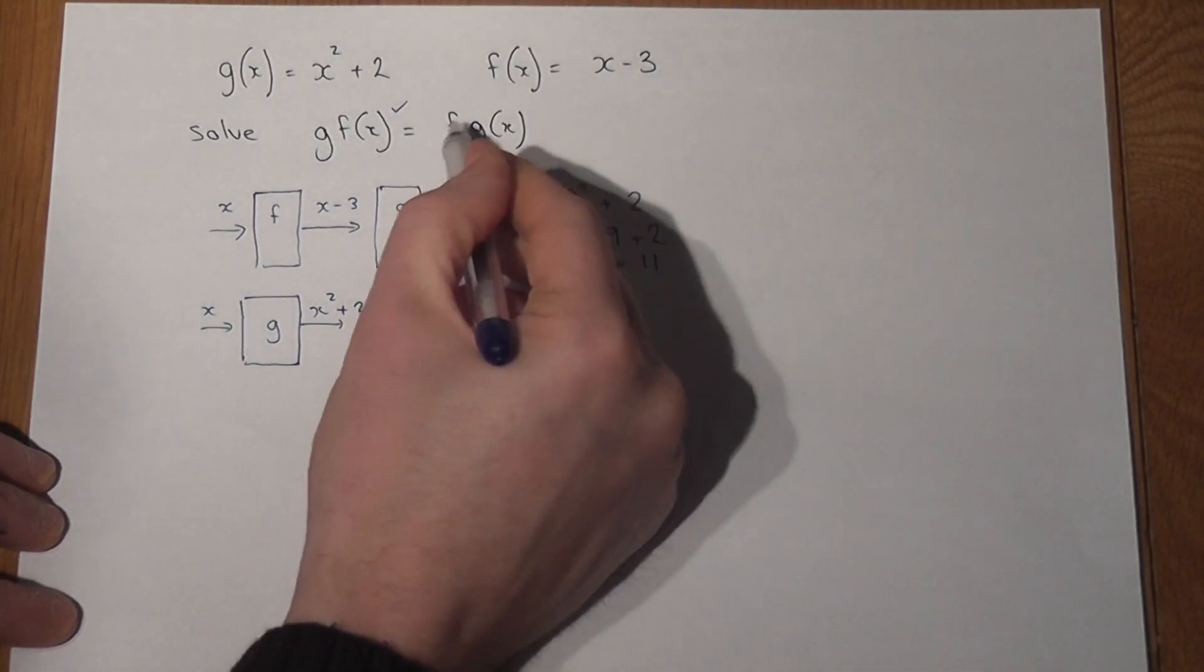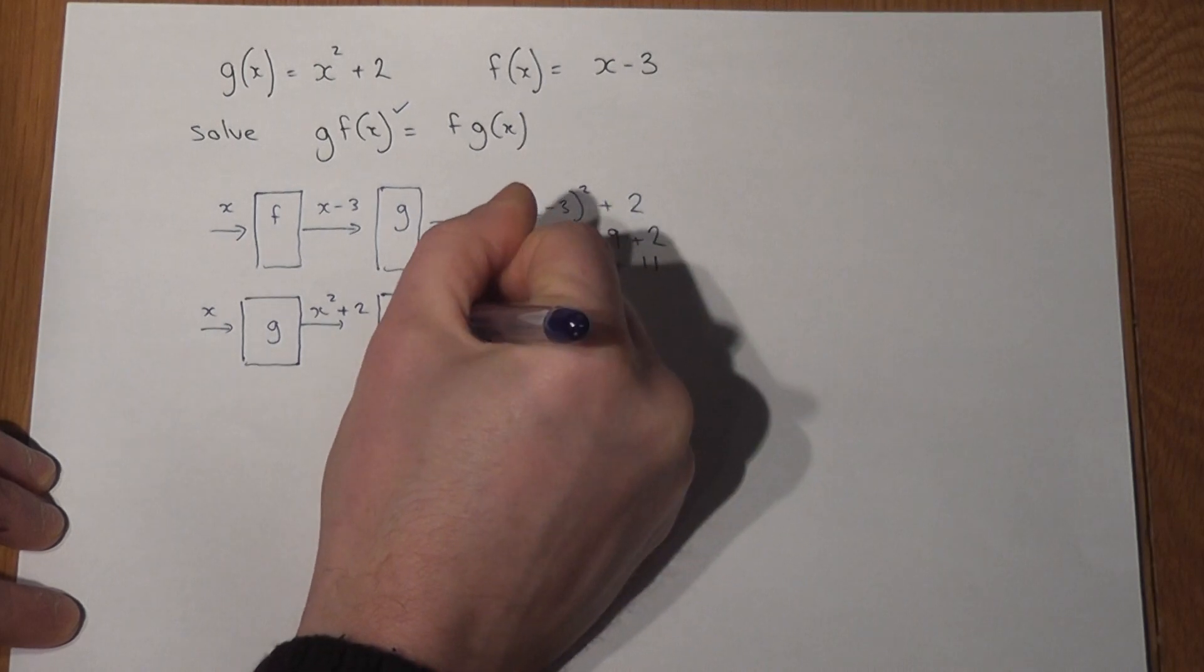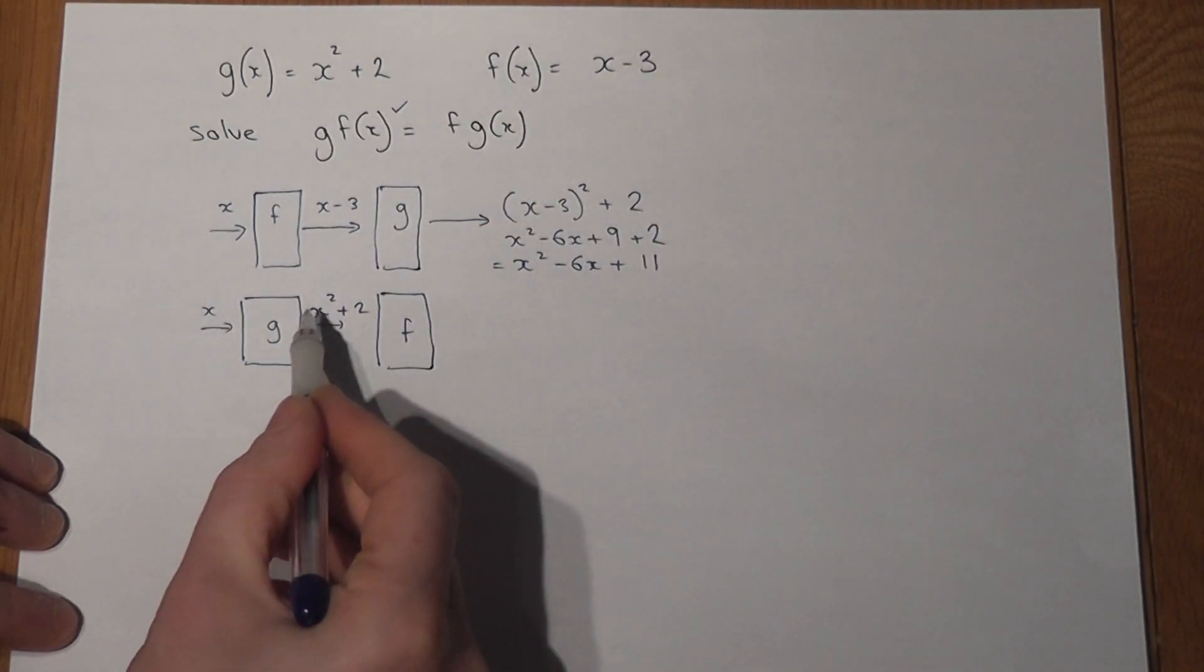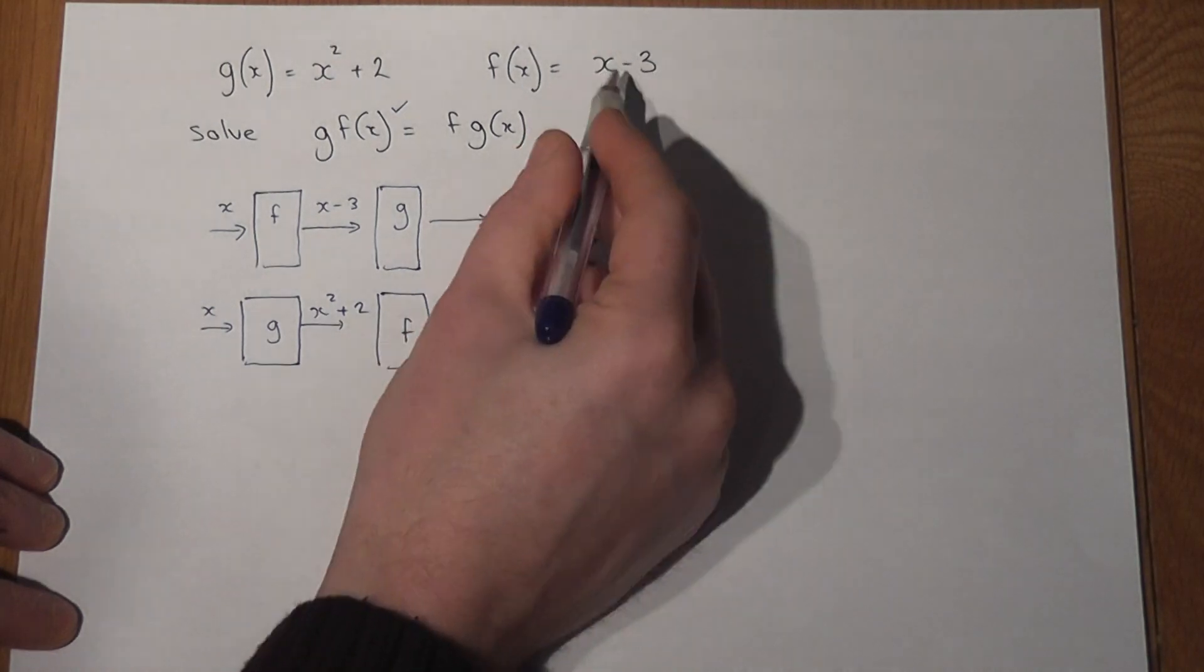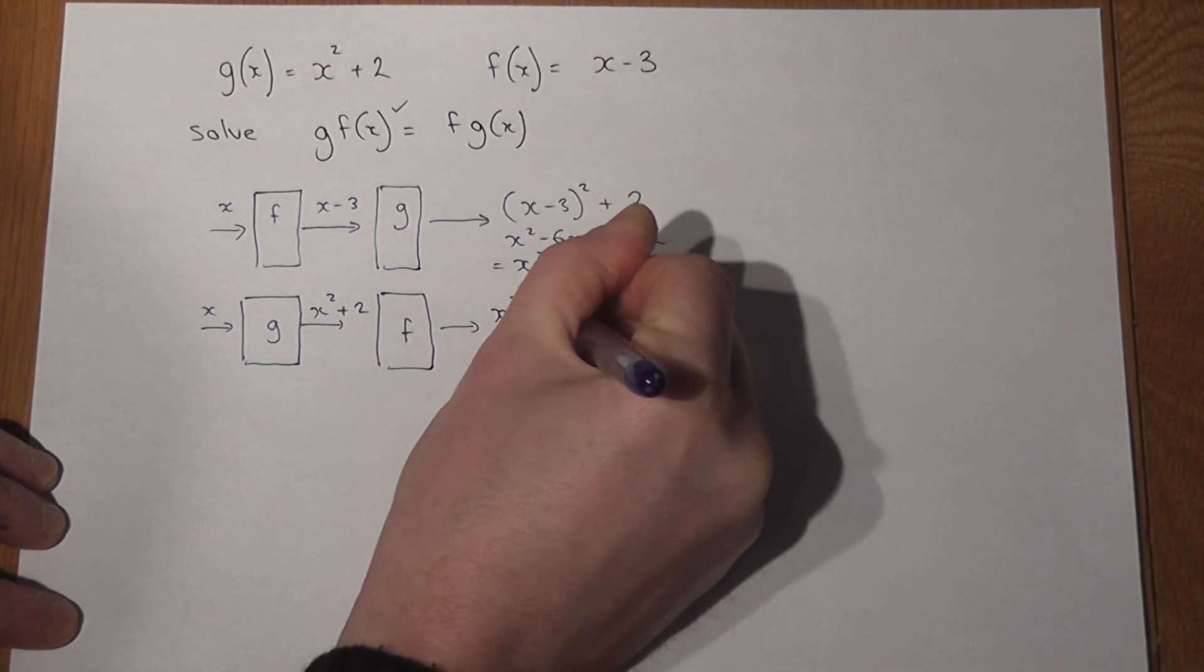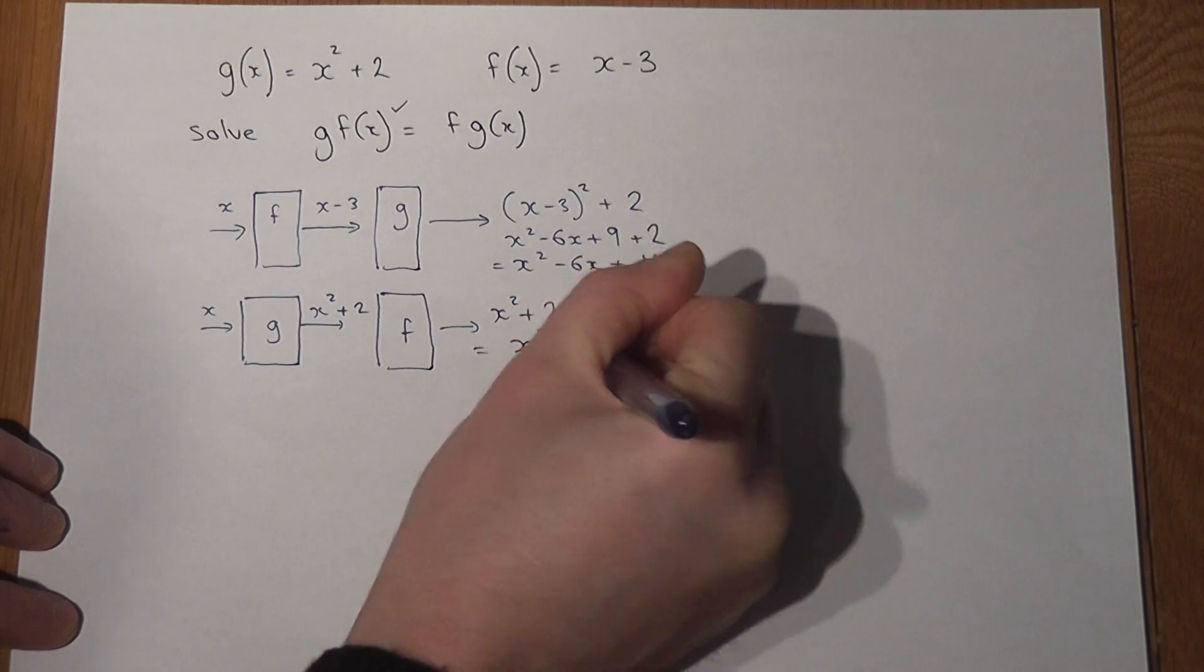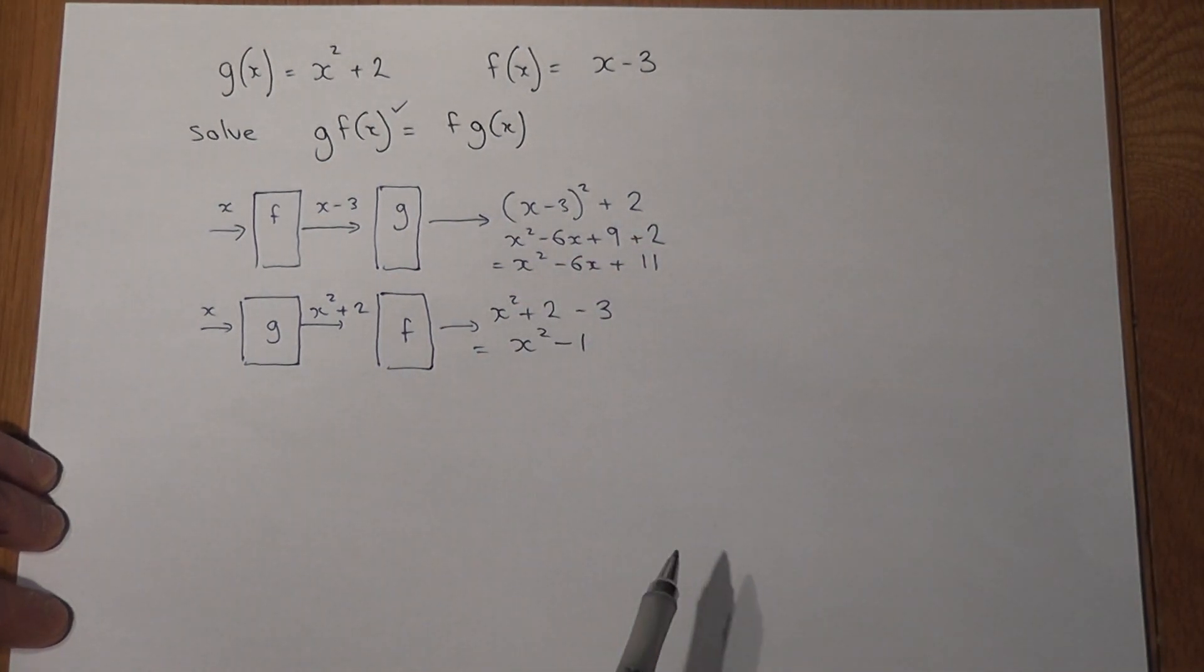Then we apply the function f. Now f says whatever the input is we take away 3. The new input is x squared plus 2, so x squared plus 2 take away 3, which when simplified becomes x squared take away 1.